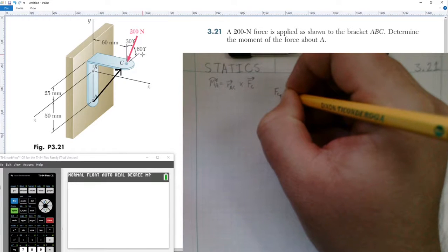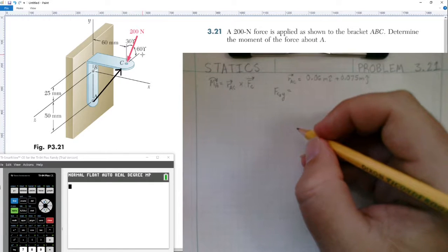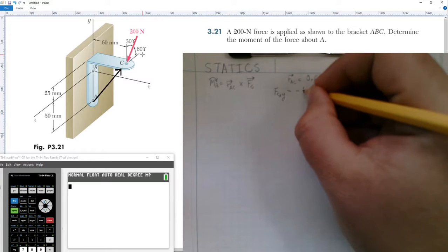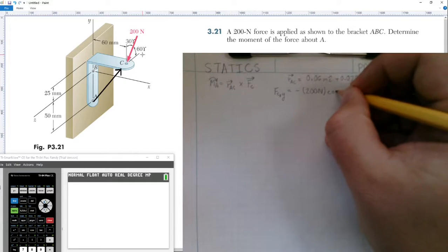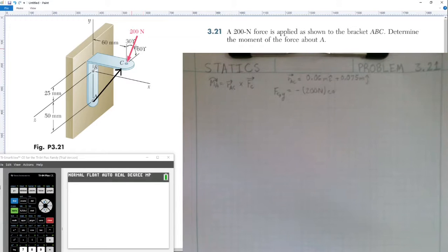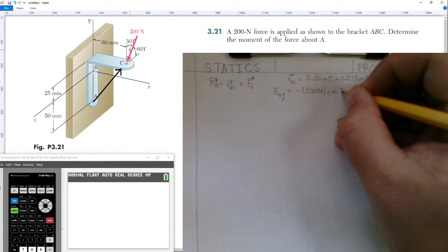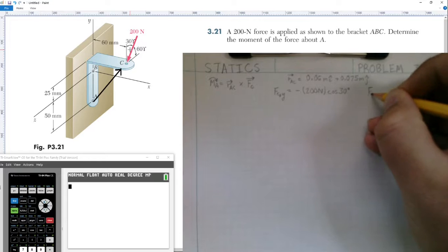Force C in the y-direction is going to be equal to negative, since it's pointing down. 200 Newtons is the magnitude multiplied by the cosine of the angle between this force and this axis, which is 30 degrees.